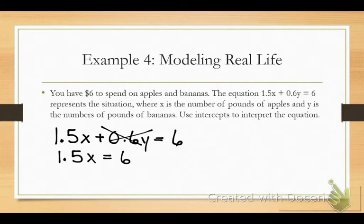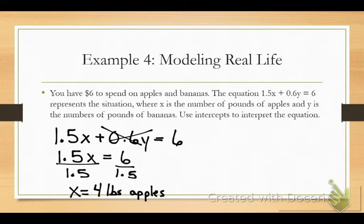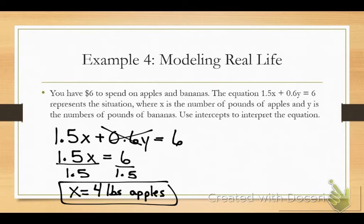X stands for apples — how many pounds of apples? If they're $1.50 a pound, you divide both sides by 1.5 and you can buy 4 pounds of apples if you buy no bananas at all. If you buy a pound of bananas, are you still going to be able to buy 4 pounds of apples? No — you'd be 60 cents short. So if you buy nothing of one category, how much could you buy of the other? That's what we're looking at.